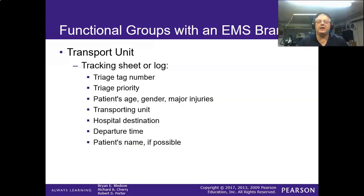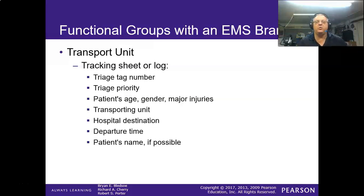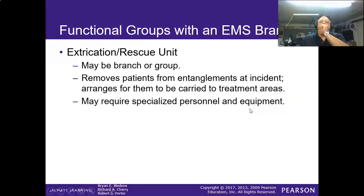Your transport team also uses triage tags — this is where we catalog who went with what truck. We'll sort the rest out later. You're going to match up the triage tag with the triage priority, age, gender, major issues, transporting unit, where they're going, departure time, and if you can get it, the patient's name.